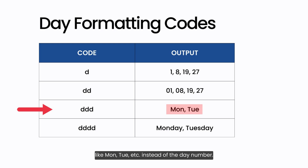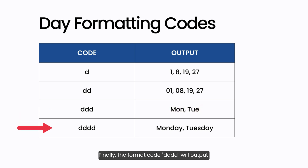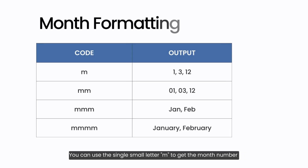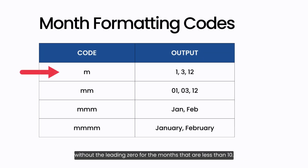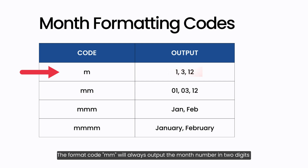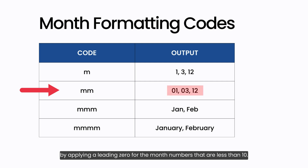The format code dddd will output the full day name like Monday, Tuesday, etc. You can use the single letter m to get the month number without the leading zero for months less than 10. The format code mm will always output the month number in two digits with a leading zero for month numbers less than 10.